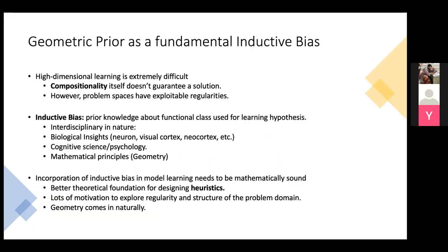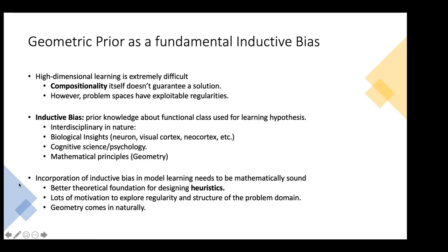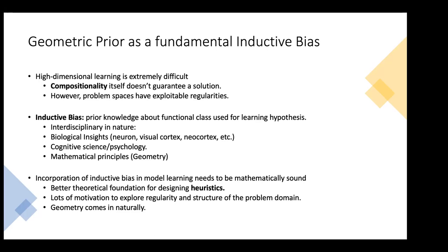As machine learning people, we know there's a very difficult problem — the curse of dimensionality. When your dimensionality goes higher, there are so many different hypotheses, and learning problems are very intractable if you don't have a good inductive bias. Machine learning people try to get insights from other disciplines of science and construct architectures that reflect more fundamental realities. The example in this presentation is geometry.